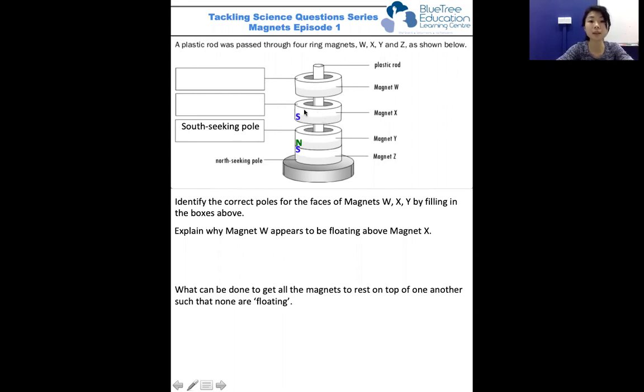And the top portion will be the north pole. Similarly, W and X are repelling one another. So this shaded portion of magnet W will be similar to this, which is the north pole. And finally, we have the south-seeking pole of magnet W.